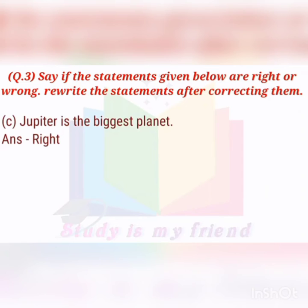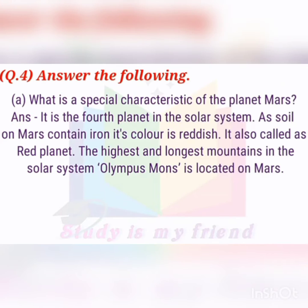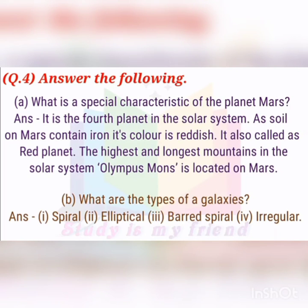Now we will go to question number four: answer the following. What are the special characteristics of the planet Mars? Mars is the fourth planet in the solar system. The soil on Mars contains iron, its color is reddish, and it is also called the red planet.